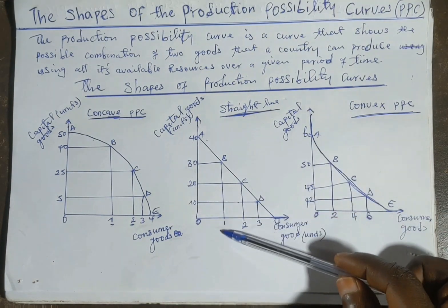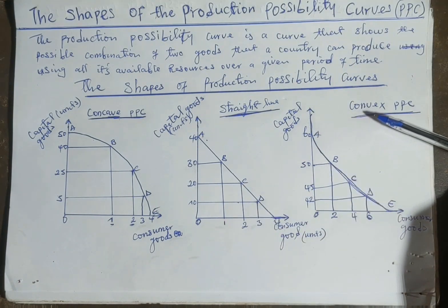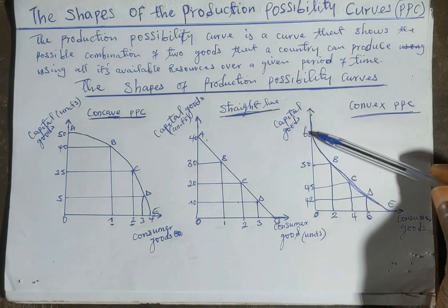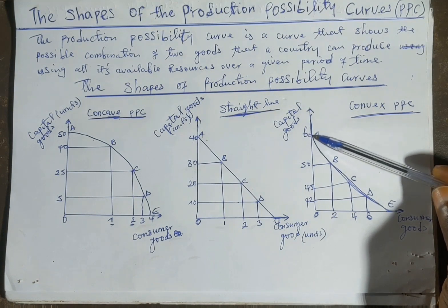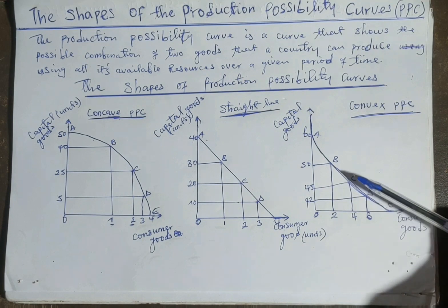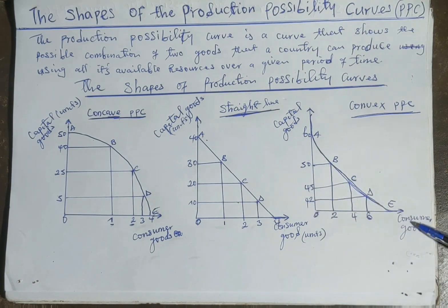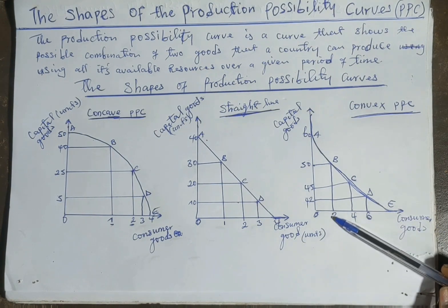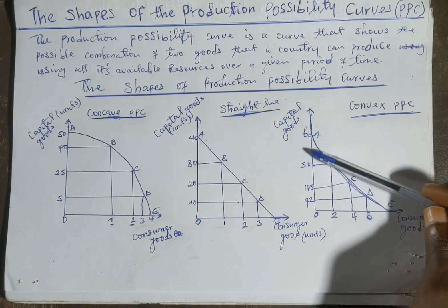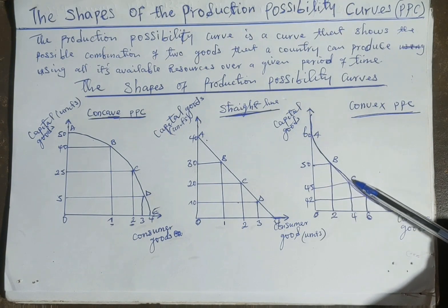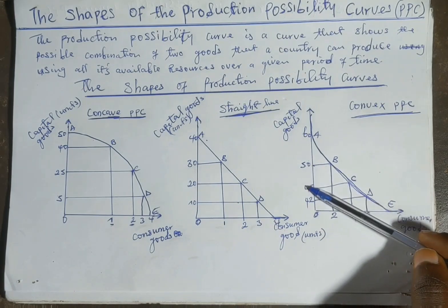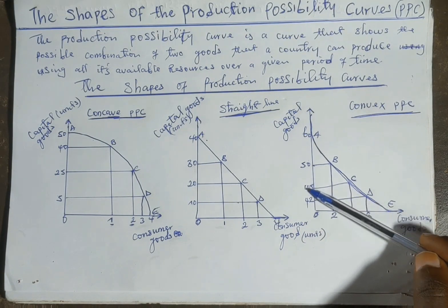For the convex PPC, it shows a decreasing opportunity cost between two goods. For example, if the country is currently producing at combination A with 60 units of capital goods and zero units of consumer goods, and it wants to reallocate resources towards consumer goods, it can produce two units of consumer goods and 50 units of capital goods — the opportunity cost is 10. At combination C, producing another two units of consumer goods, the opportunity cost has decreased by 5. That is why we call it decreasing opportunity cost.